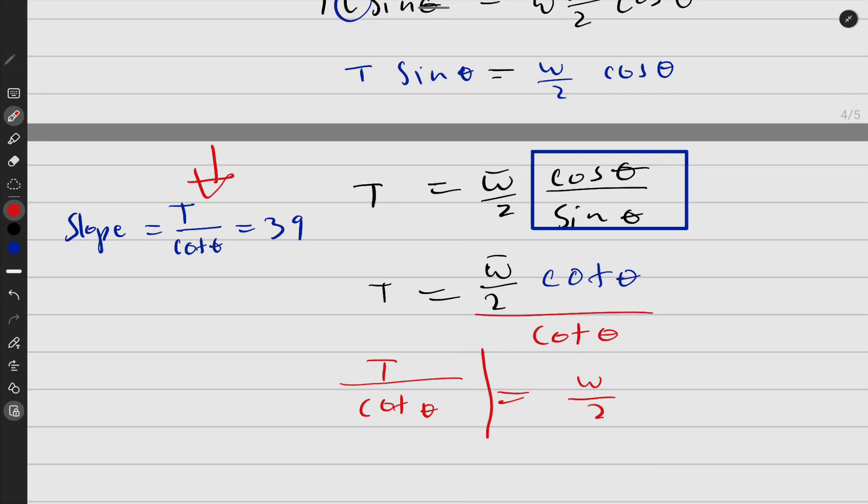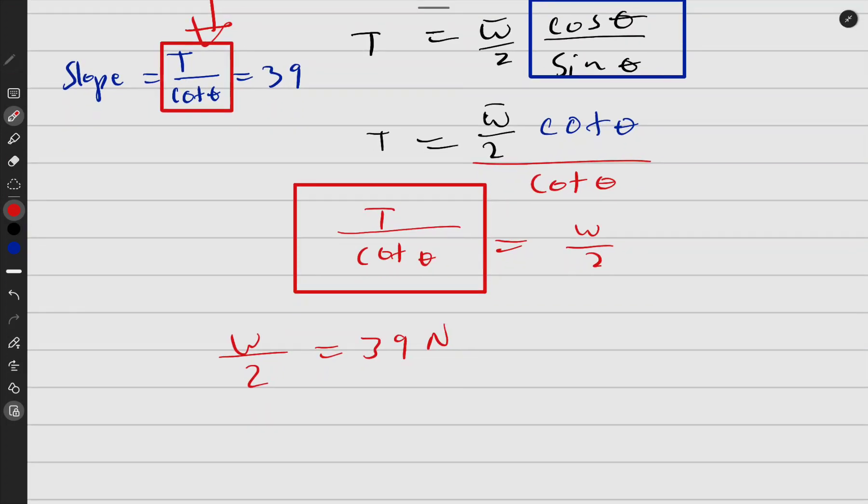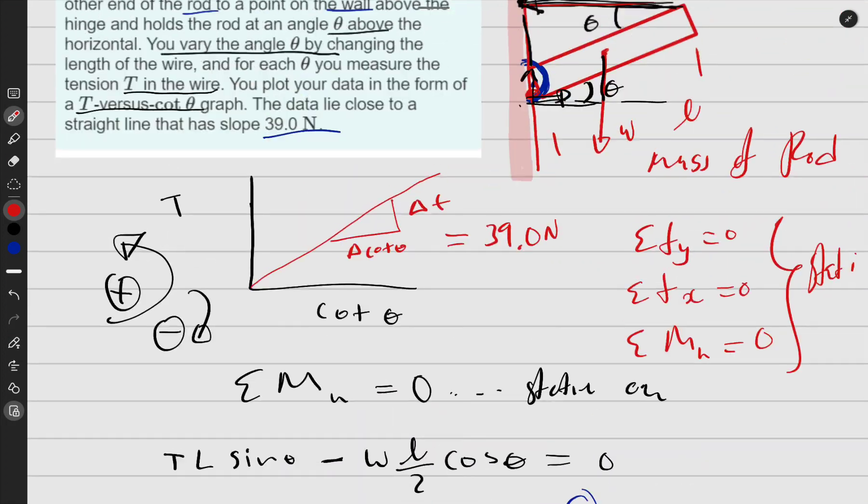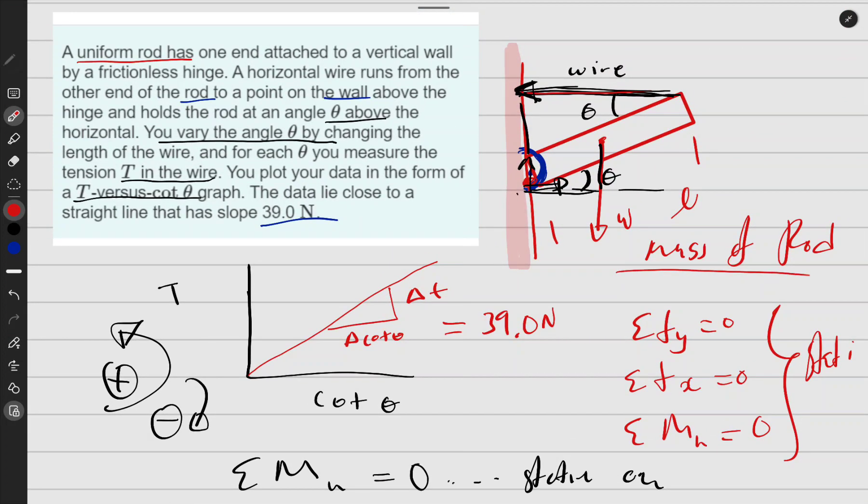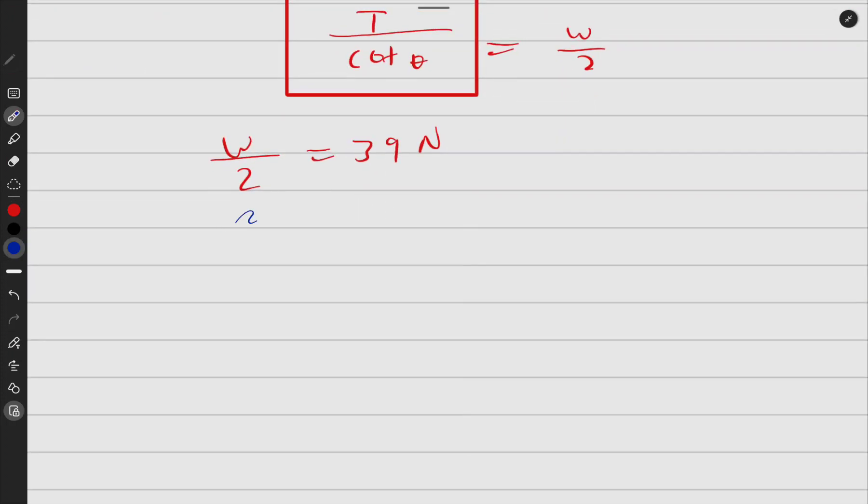Weight over two equals 39 newtons, right? But they didn't want weight—they wanted mass. 9.8 divided by two is equal to 39 newtons, and you do your math here. Hopefully you cross multiply.